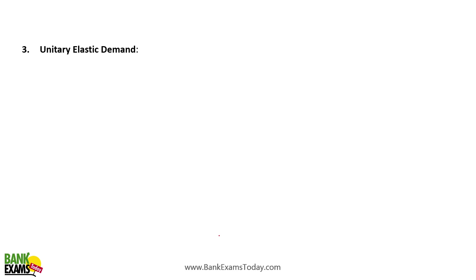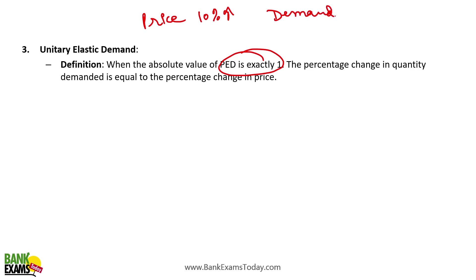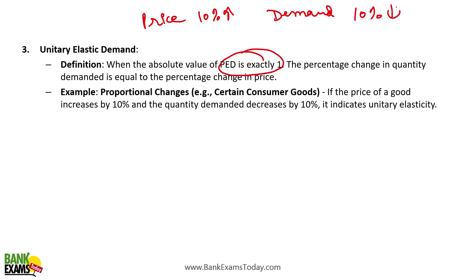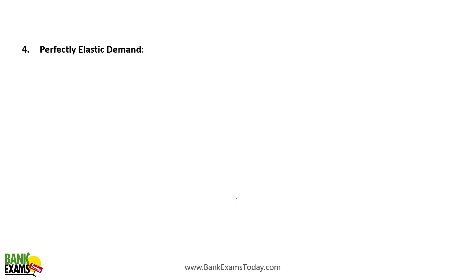Unitary elastic demand means when the absolute value of price elasticity of demand is exactly 1. The percentage change in quantity demanded is equal to the percentage change in price. If price is increased by 10%, demand would also decrease by 10% — the same effect. This is unitary elastic demand.